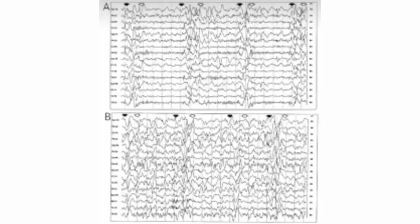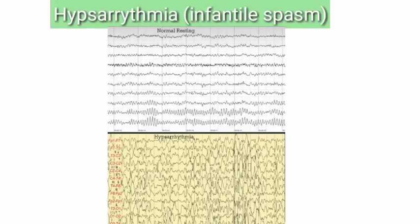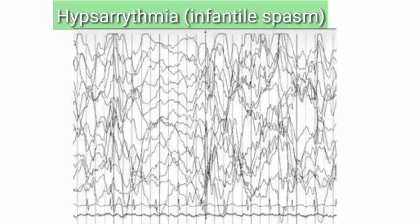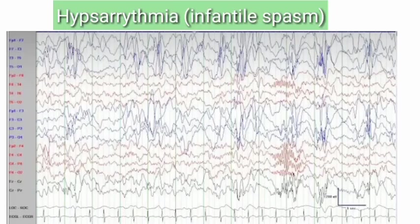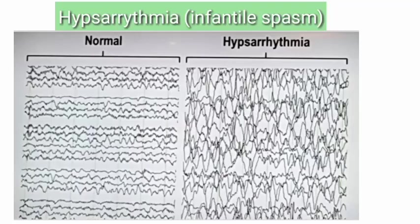Next is hypsarrhythmia, seen in infantile spasms. Hypsarrhythmia is a very unique type of EEG characterized by a chaotic background along with high-voltage waves. There is no typical organized pattern — just a chaotic background with high-voltage waves. EEG examples shown here clearly demonstrate this chaotic, disorganized background with high-voltage activity.